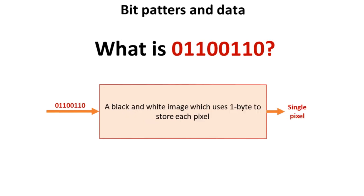We don't simply just have to have text and numbers. If we threw the 8 bits into a black and white image, which used 1 byte to store each pixel, then that string of 1s and 0s would pop out as a single pixel of black or white colour.